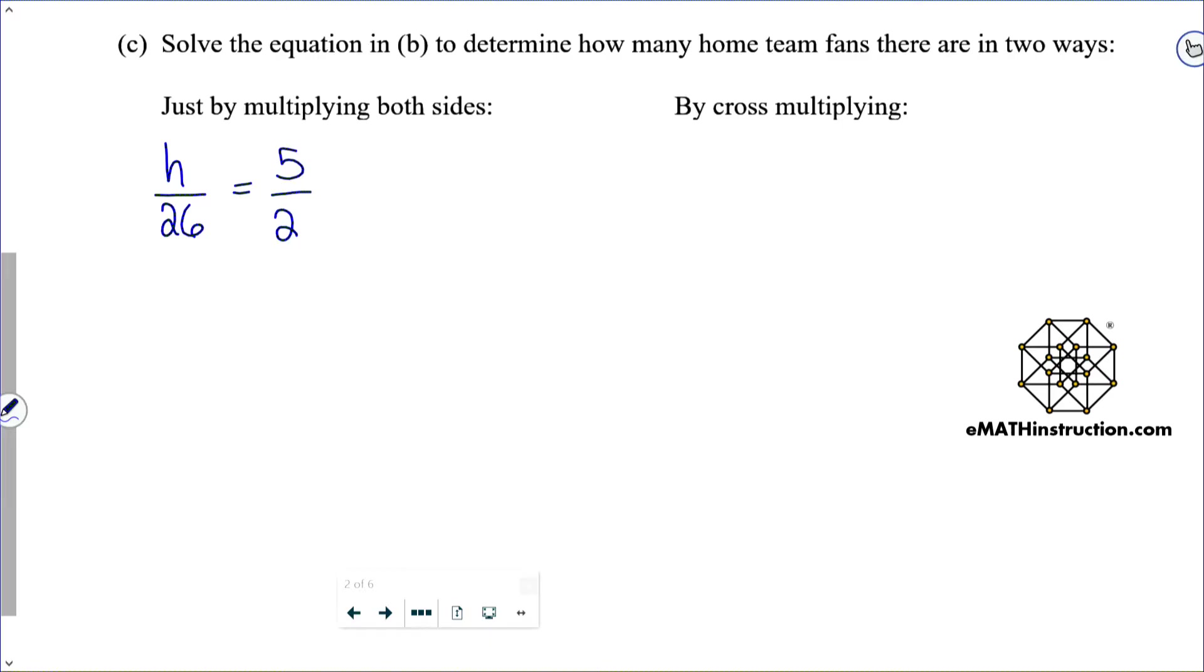Here it says solve this thing by just multiplying both sides. I've got H divided by 26 equals 5 divided by 2. So I can literally solve this by just undoing what's been done to the variable H, specifically division by 26. So I multiply both sides by 26. Now I just have to figure out what 5 halves of 26 is. 1 half of 26 is 13. Now I just do 5 times 13, and I find 65 as the number of home team fans.